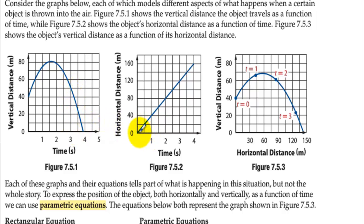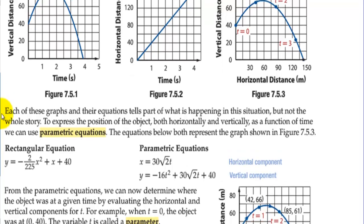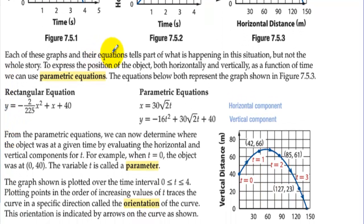This one shows the horizontal distance it travels over a certain amount of time. And then this one depicts vertical distance versus the horizontal distance. They're all telling a similar story, but yet a different story. Each of these graphs and their equations tells part of what is happening in the situation, but not the whole story. To express the position of the object, both horizontally and vertically, as a function of time, we can use parametric equations.